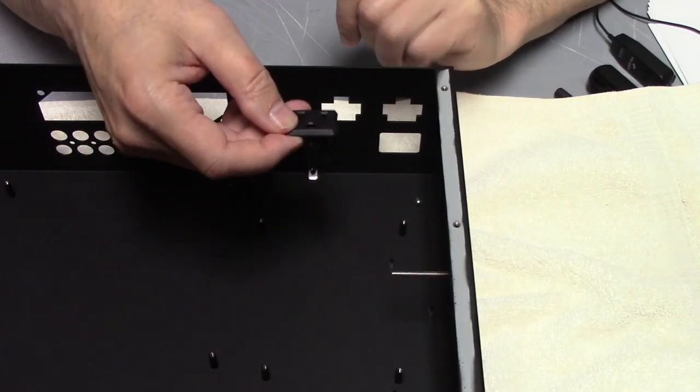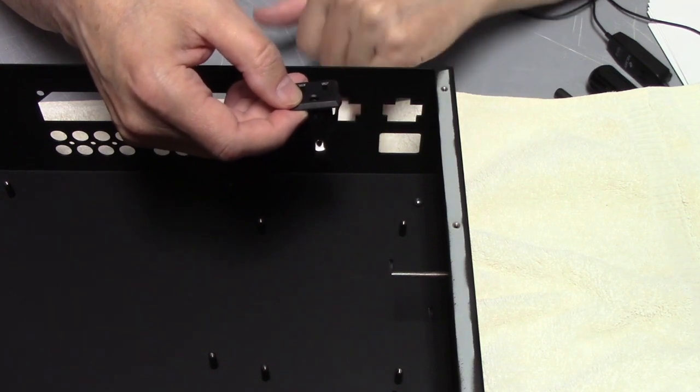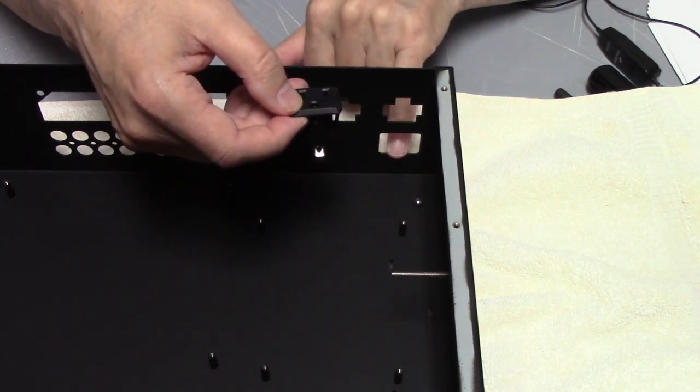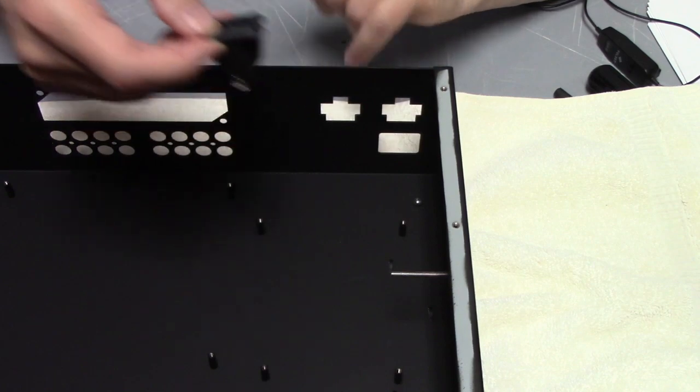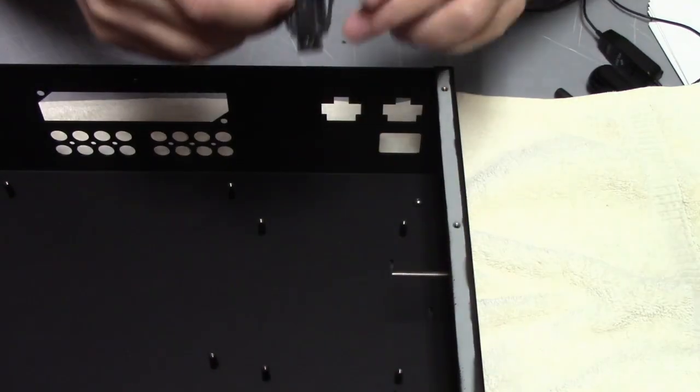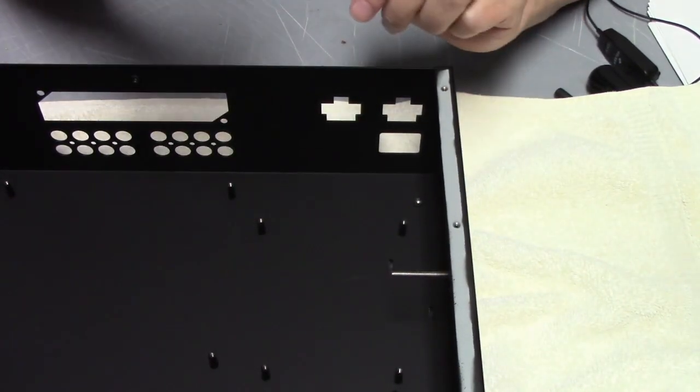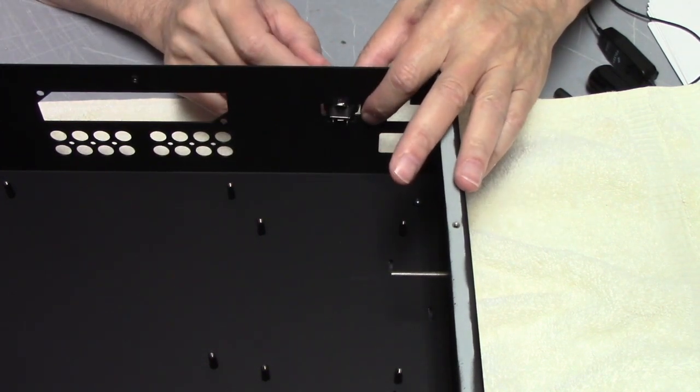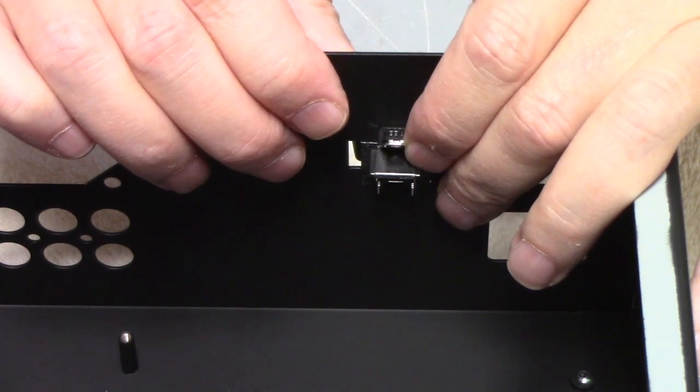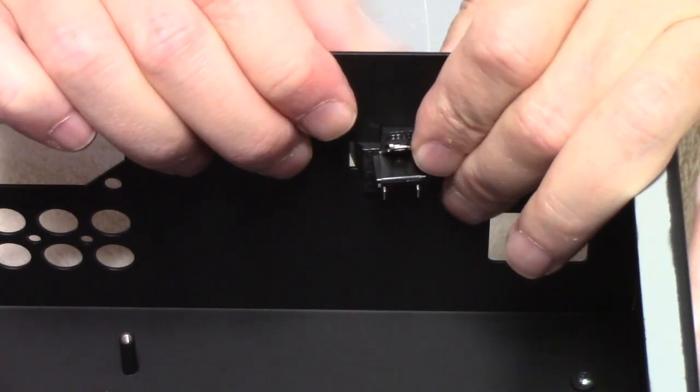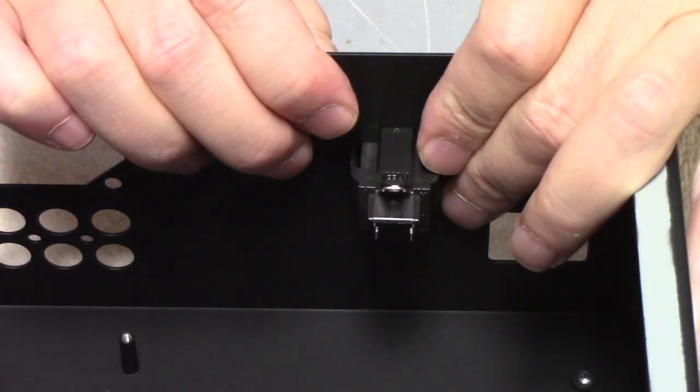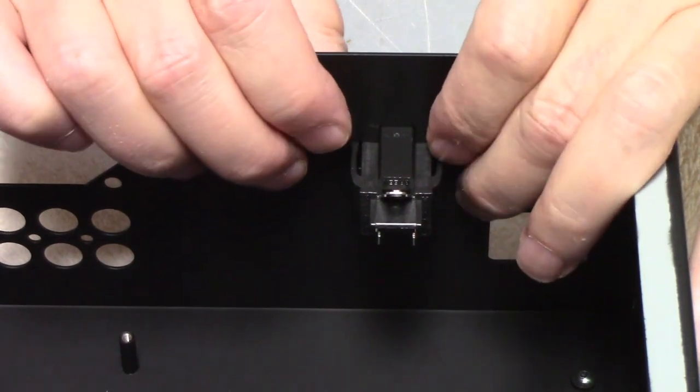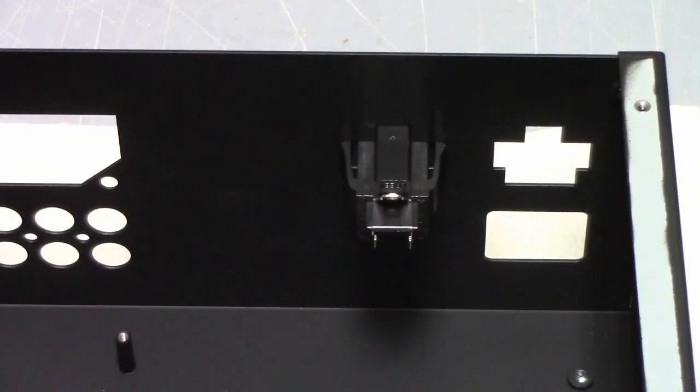Now it's time to install the convenience outlets into the back panel. The power entrance connector into the back panel. And then we'll install the switch. I'll just do that here as we are live. Insert it from the back. I will say that the convenience outlet fit is snug. But have faith and they snap in just like they were made to.